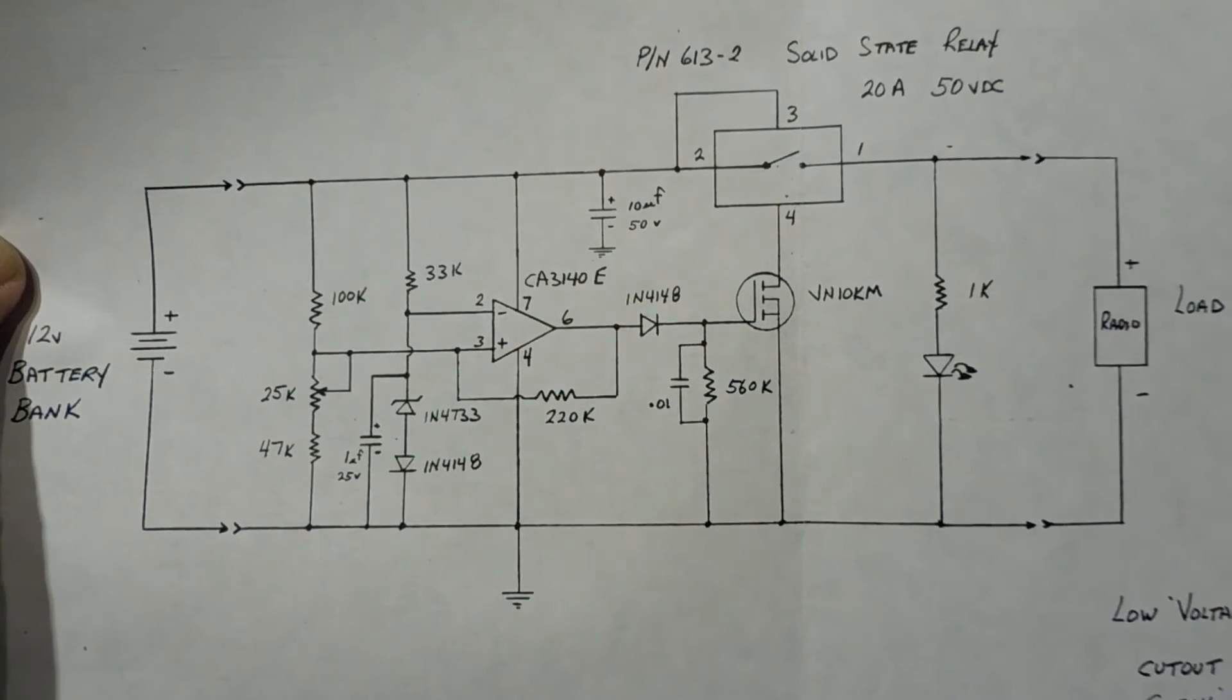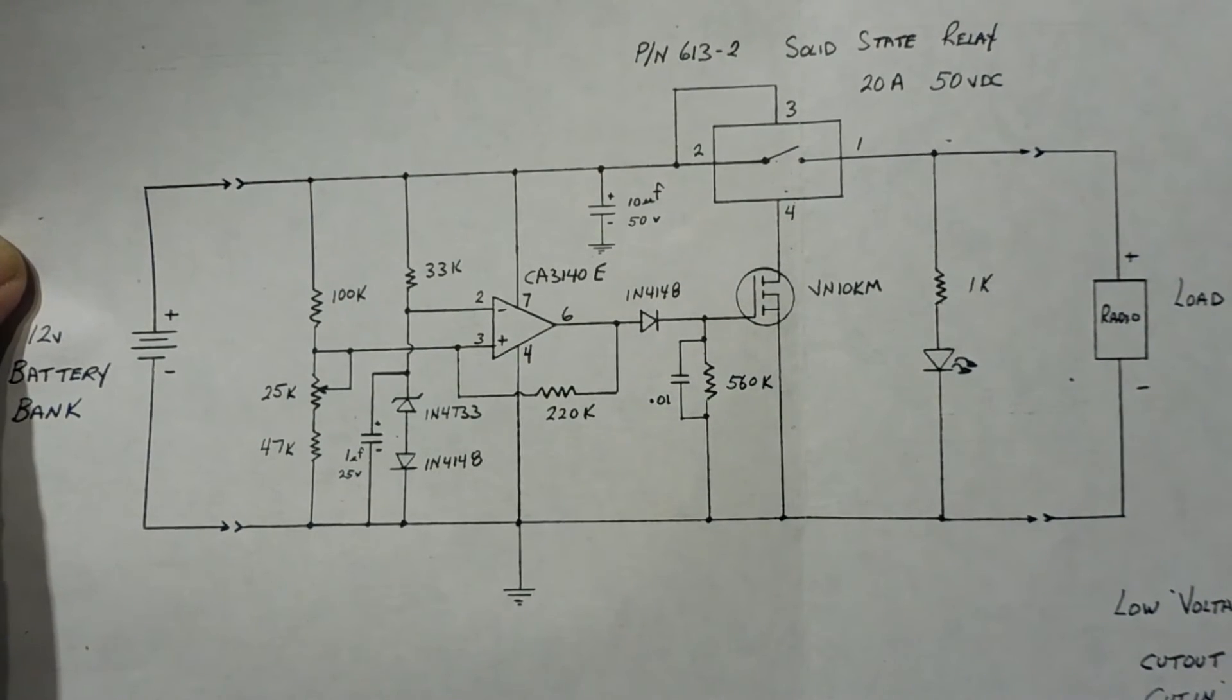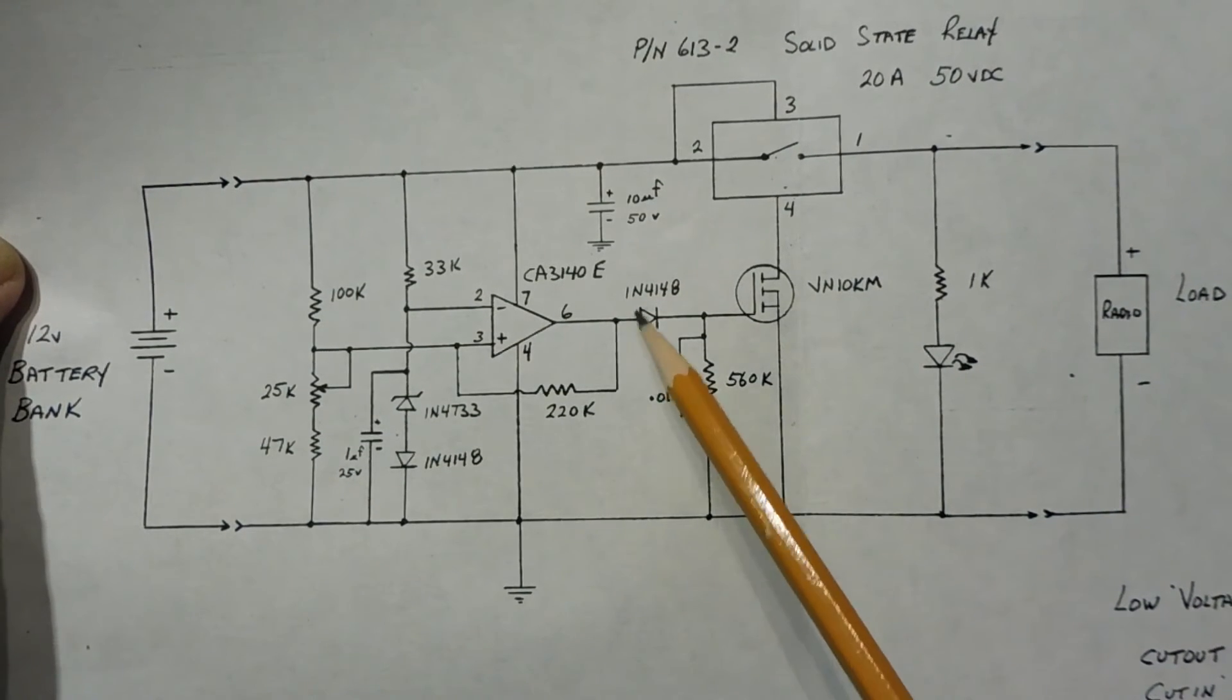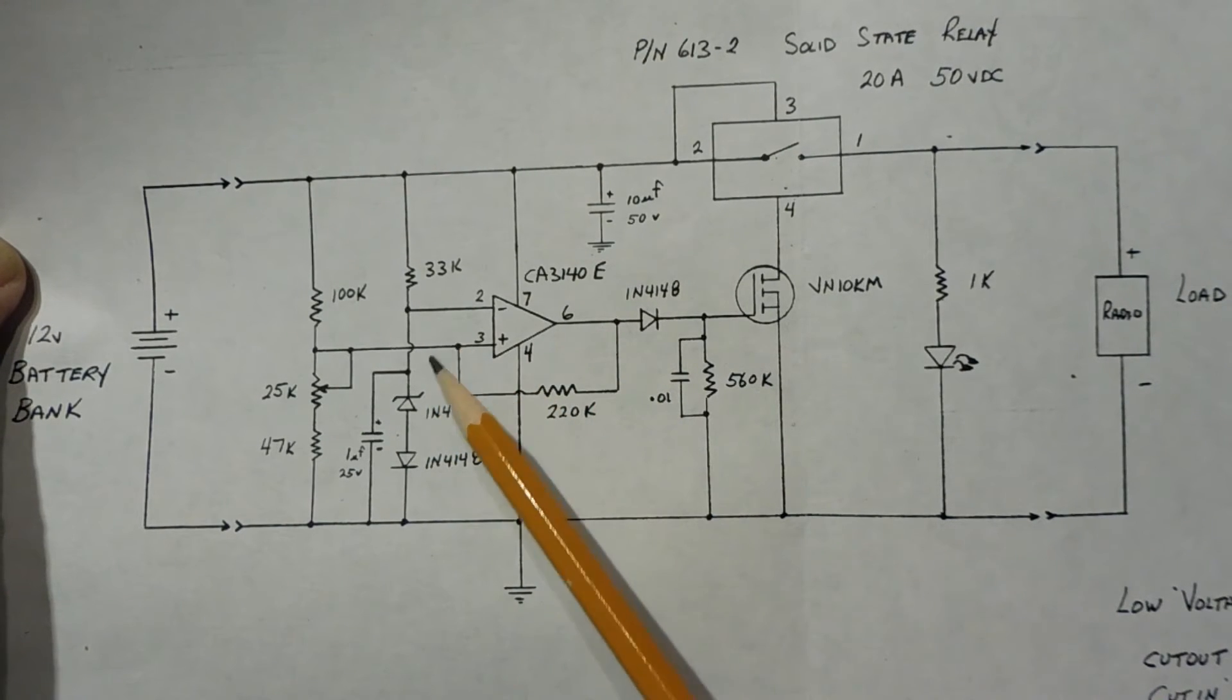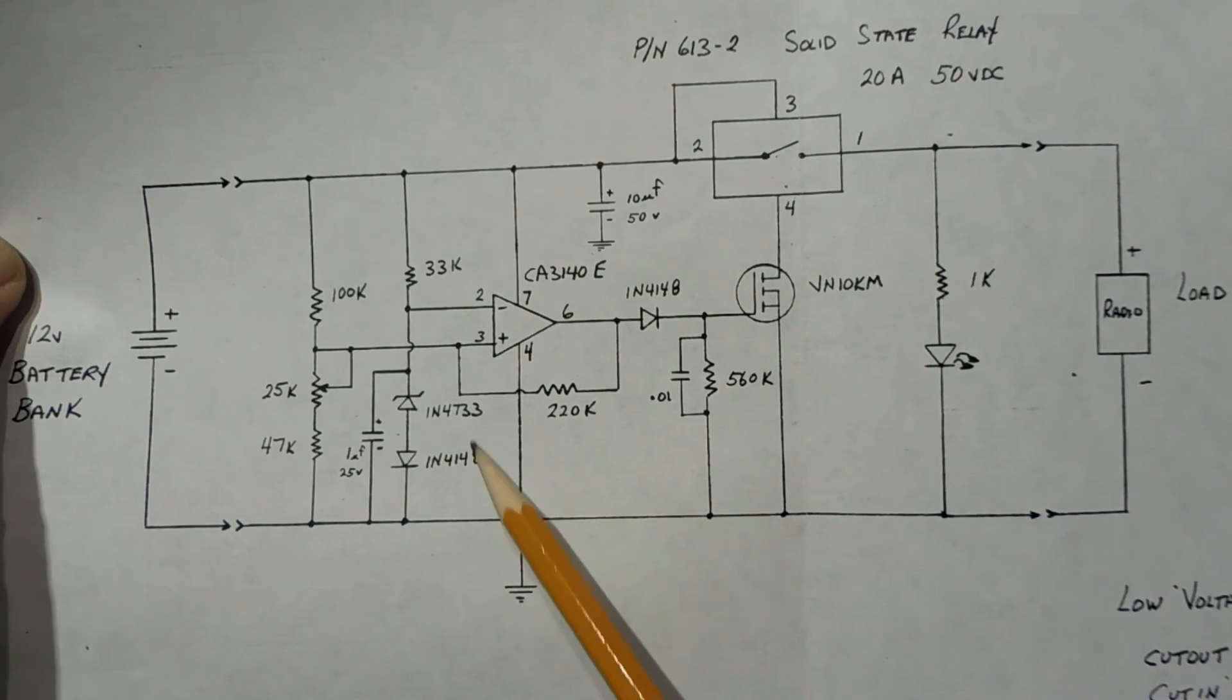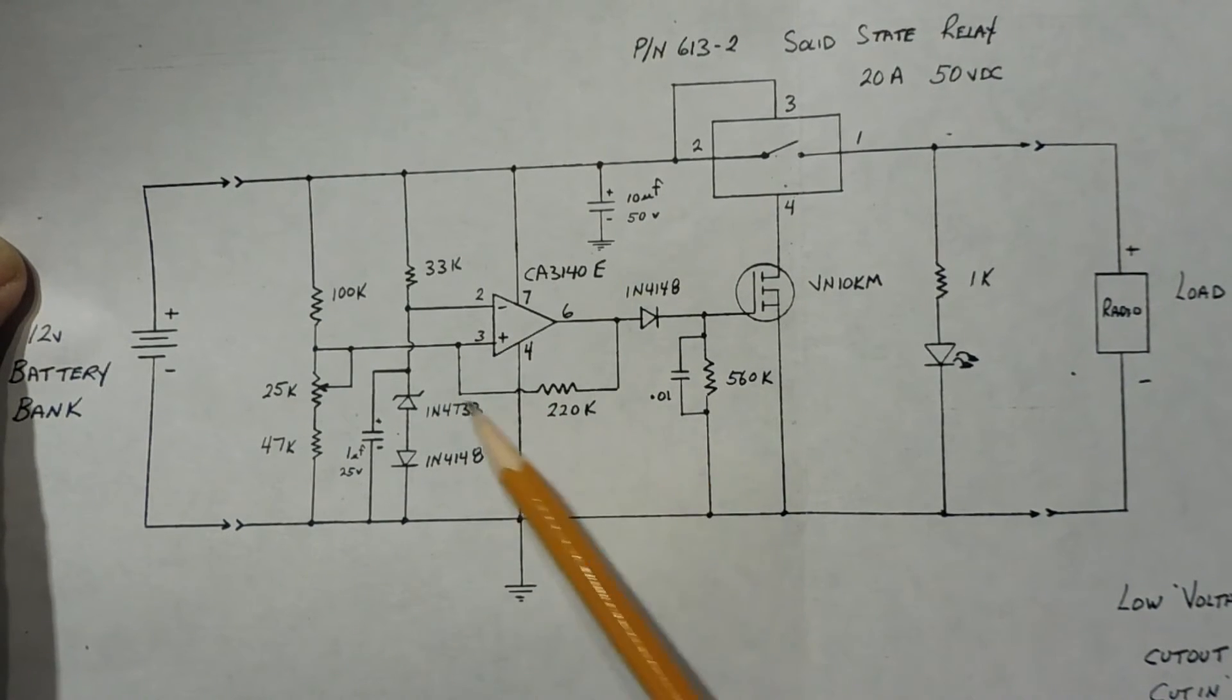Now to get the hysteresis, our 3-volt hysteresis for our cut-in and cut-out, we use this feedback resistor, this 220K feedback resistor from pin 6 to pin 3. And that will give us a 3-volt hysteresis, and we could actually adjust that resistor for whatever hysteresis that you want.